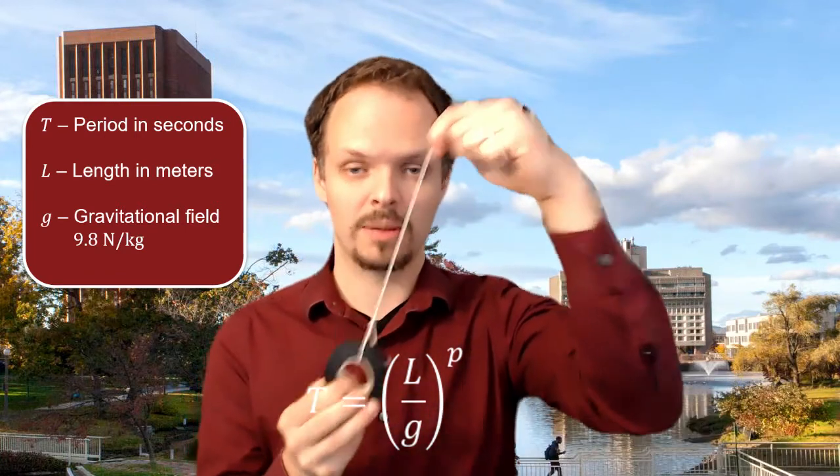Length is the length of your pendulum measured in meters, and G is the gravitational field, 9.8 newtons per kilogram.